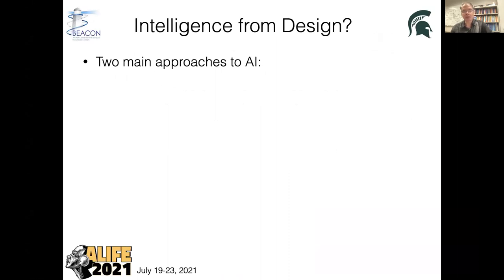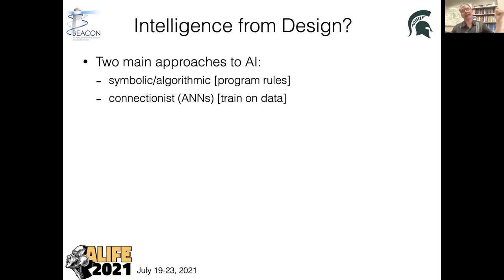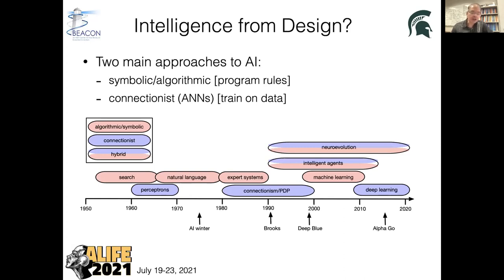There are really two main approaches to AI. One is the symbolic or algorithmic way of doing things, which means we try to program the rules of what we think intelligence are. The other is the connectionist or ANN approach, where we essentially train neural networks on data and hope they can generalize enough to solve problems they haven't seen. These approaches have been stuck in a rut. Here's an overview of where this field has gone since 1950 to roughly today. We see these two different approaches either existing in parallel or one taking over from the other, and now we are in the age of deep learning. But there is another approach — a hybrid between connectionist and algorithmic — called neuroevolution.